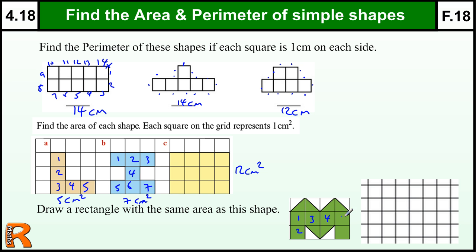3, 4, 5, 6 whole squares, plus 1, 2 halves makes 7, plus another 2 halves makes 8, plus another 2 halves makes 9.